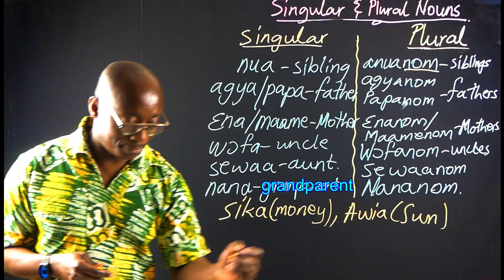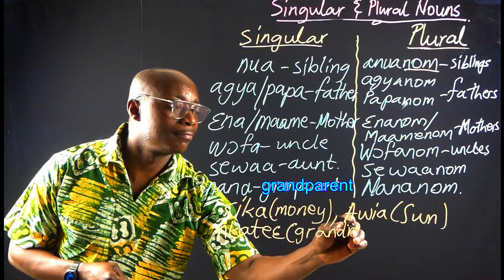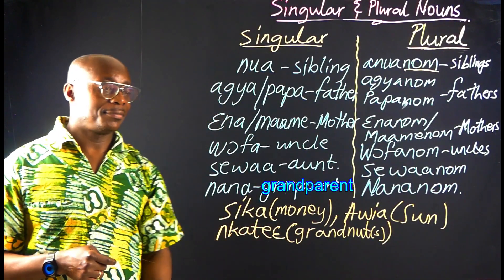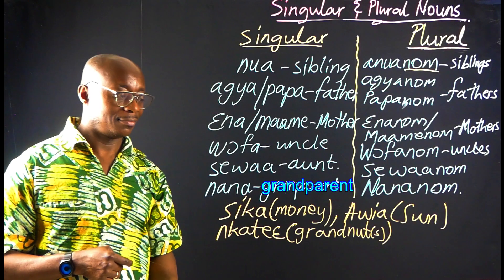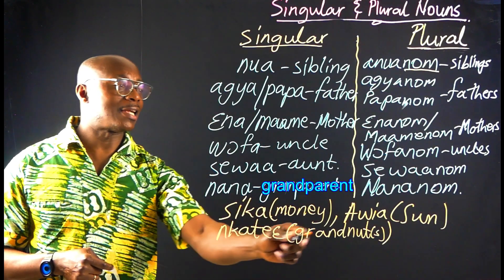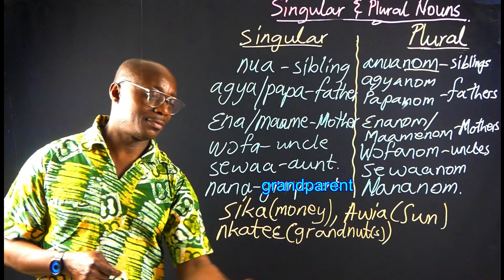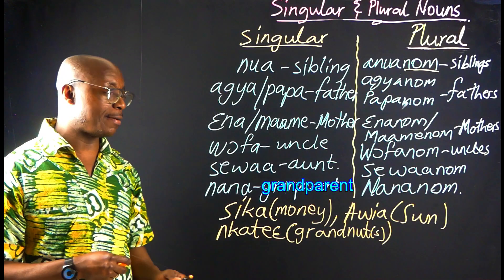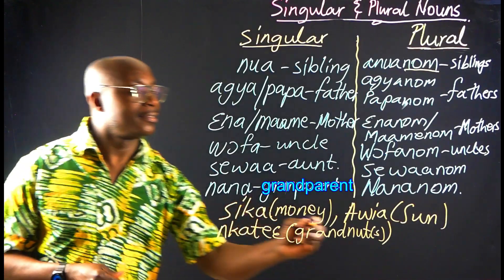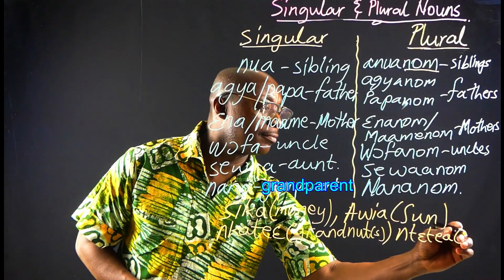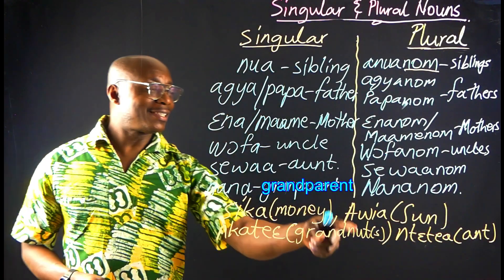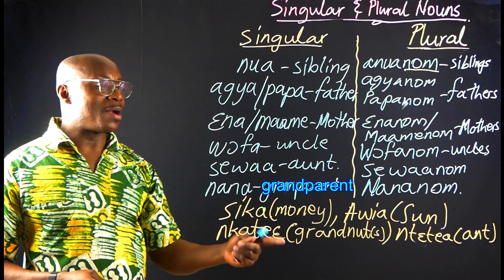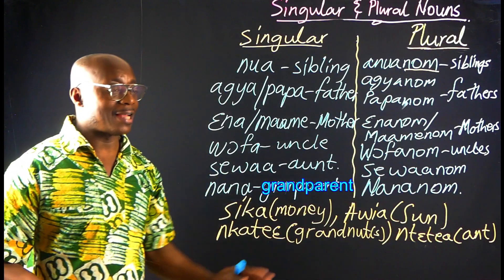We also say Nkatiye — also written Ntatiye. That is the small ant. Whether singular or plural, we say Ntatiye. The plural and singular remain the same.